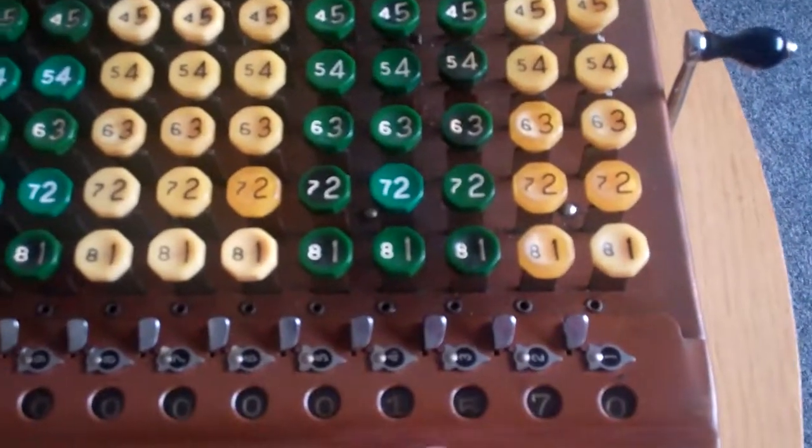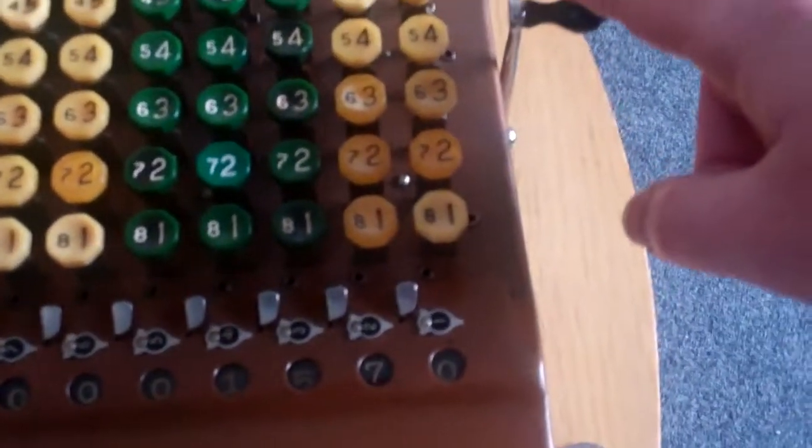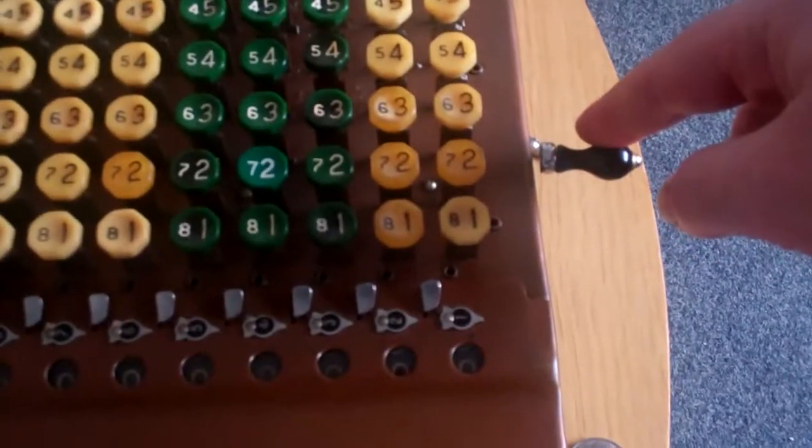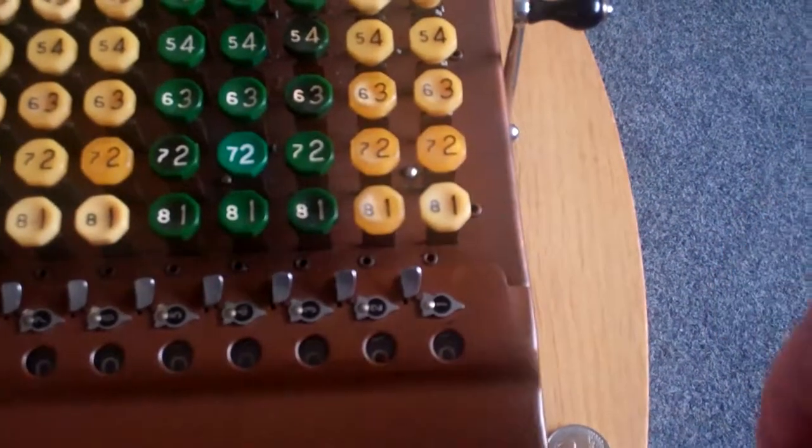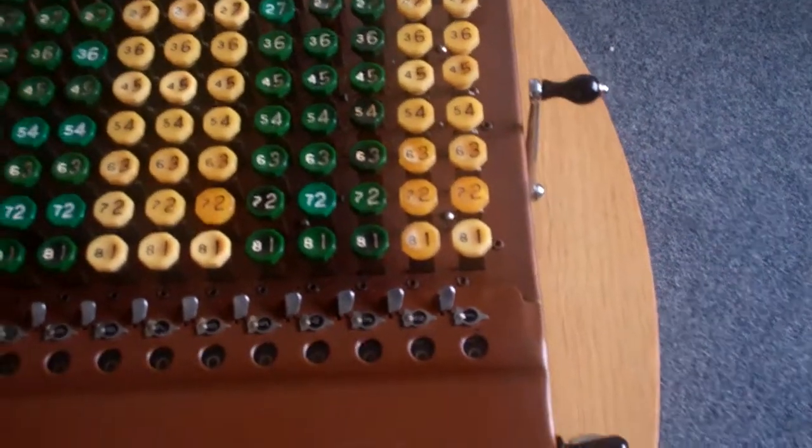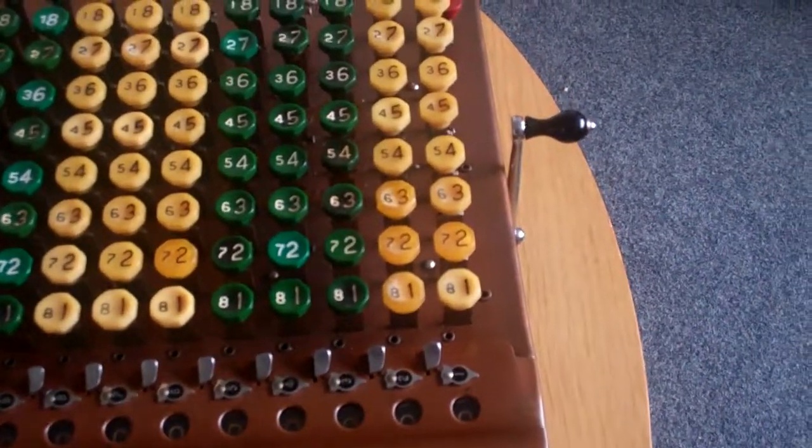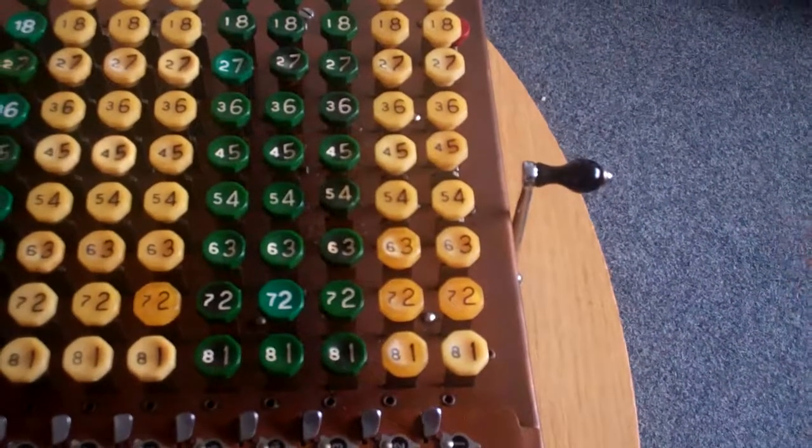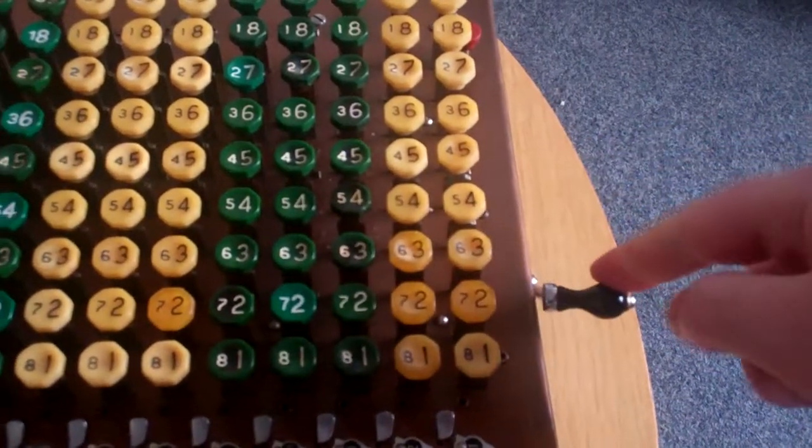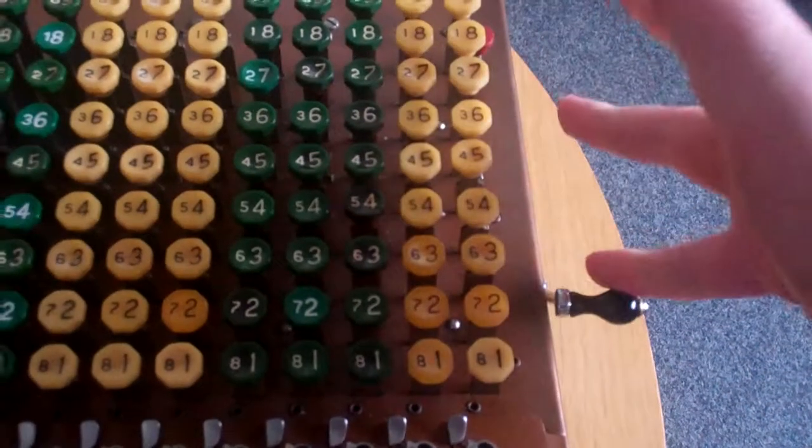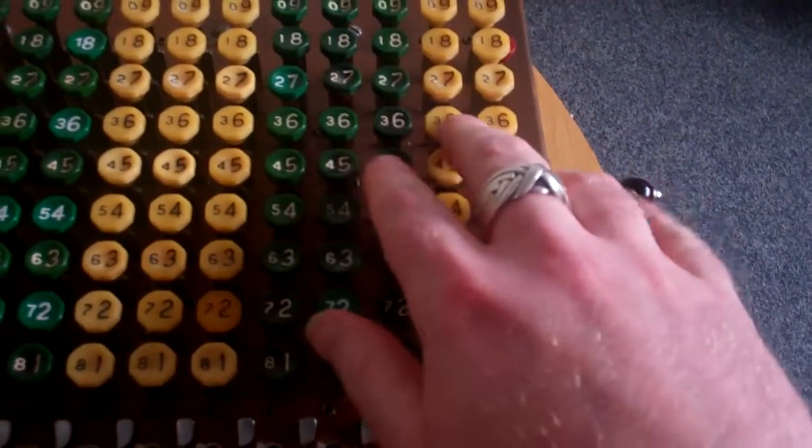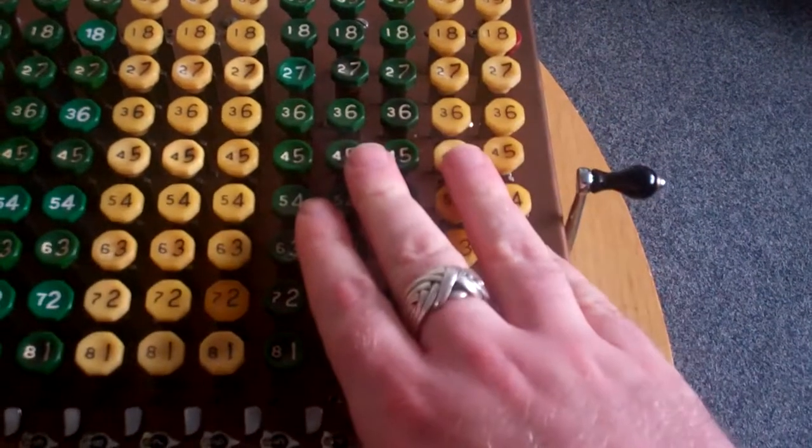And if you're finished, you can then pull this lever towards you, and the numbers are zeroed. Older versions of the Comptometer had a larger lever that you had to push back and pull forward. This one is much, much lighter. You can do it with your pinky if you like. So you don't even have to move your hand off the keyboard. You can just do it straight away.